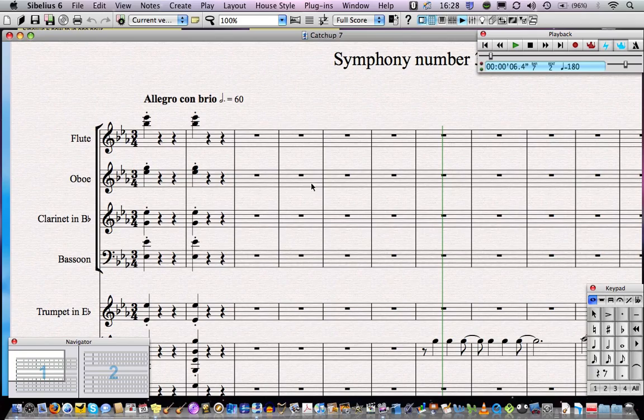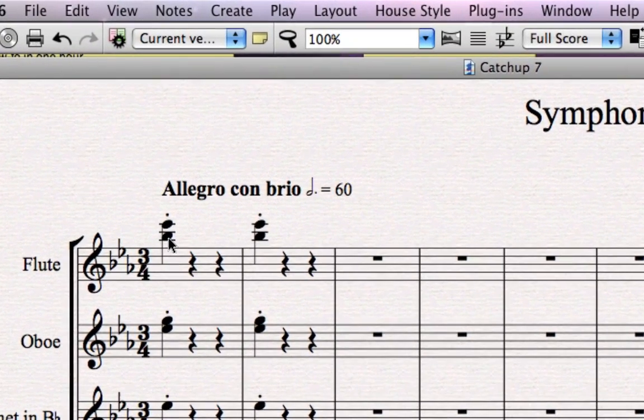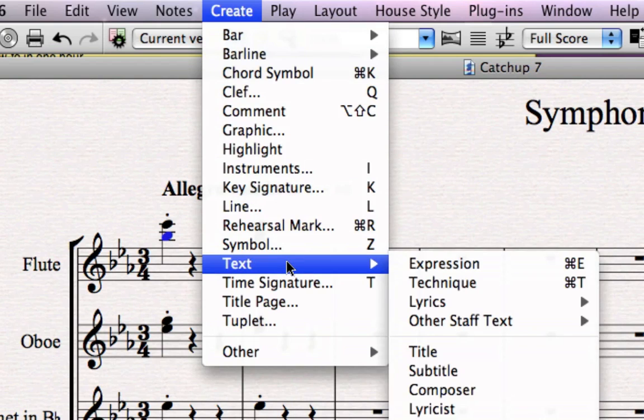So the first thing we'll do is add dynamics to that opening chord that we've already input. The long way to do it is to click on the flute, which we've already put those notes in, and then go to Create, then Text, then Expression, because our dynamic is an expressive marking.